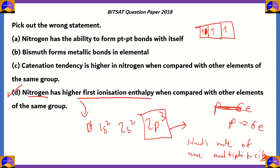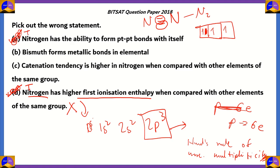Since option D is true, it cannot be the wrong statement. Option A states that nitrogen has the ability to form pπ–pπ bonds with itself, which is true — nitrogen forms a triple bond consisting of two pπ bonds and one sigma bond, which is why N₂ is quite stable and exists in gaseous form. So option A is also true and therefore not the answer.